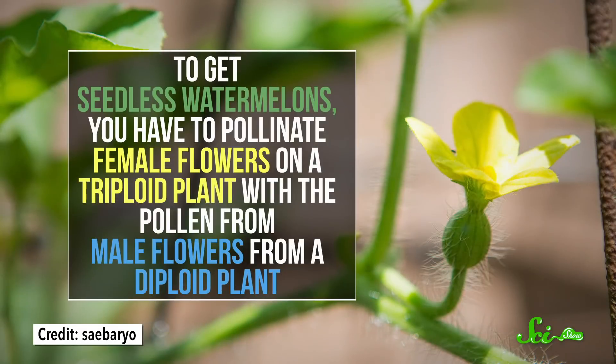But planting these genetic weirdos isn't the last step to delicious seedless fruit. So to get seedless watermelons, you have to pollinate female flowers on a triploid plant with the pollen from male flowers from a diploid plant. And since the triploid plants don't produce seeds, you have to keep mating diploid and tetraploid plants to make them. So you end up having to grow at least three watermelon plants to get a seedless crop every year.